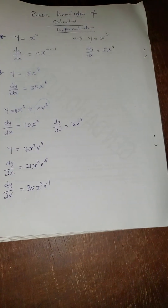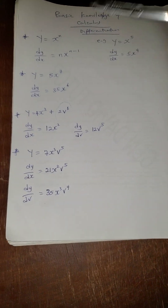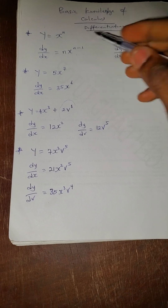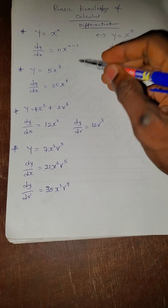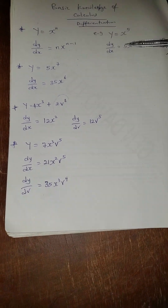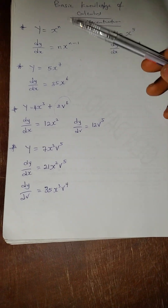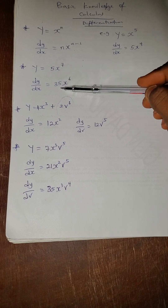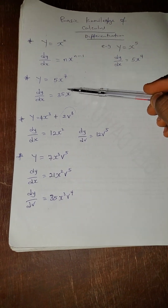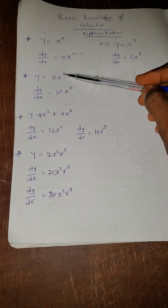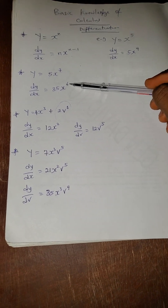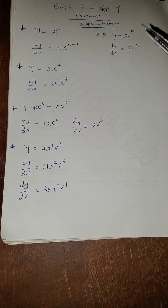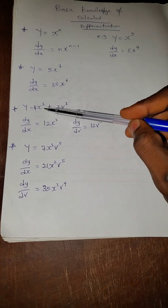That is the basic rule for differentiation. Now let's move on to Case 1. For example, if y = 5x⁷, then dy/dx = seven times five, which is 35, then x to the power seven minus one, which is six. So dy/dx = 35x⁶.